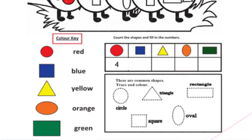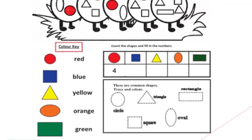The next part is common shapes — trace and color. The basic shapes are given. First, you need to trace them, and then color these shapes according to the given color key. I hope you have understood how to do the worksheets. Thank you so much.